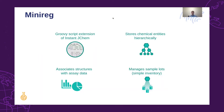MiniReg is a mini-registration system which can be used in IGC. It is a Groovy script extension of IGC developed and maintained by ChemAxon's professional services team. It can be used to store chemical entities using a hierarchical, structural approach, and also to associate structures with assay data. Additionally, MiniReg also has some simple inventory management features through the handling of sample nodes.